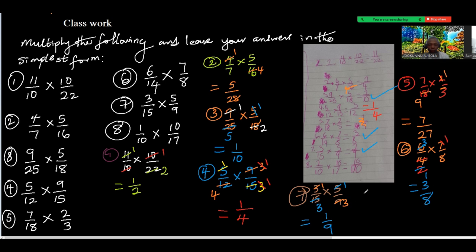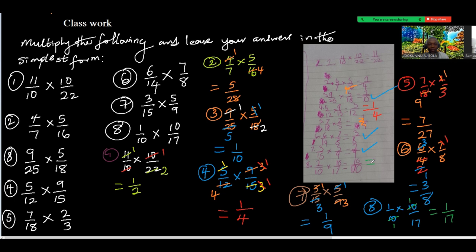Number eight, the last question: 1 over 10 times 10 over 17. If 10 cancels with 10 what do we have left? That should be 1 over 17. You multiplied and wrote 10 over 170 without cancelling. I'm going to send this page to you so you can put down the correction, and I'll also send you five questions to try.